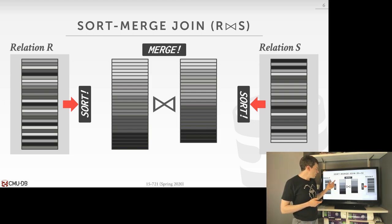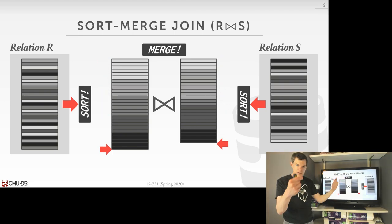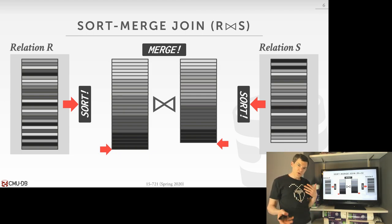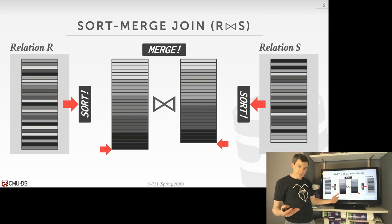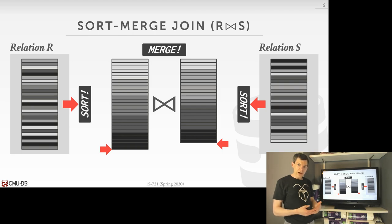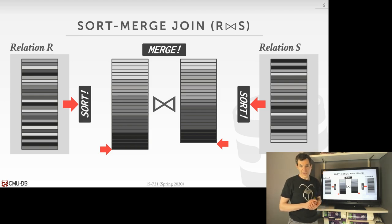At a high level, in phase one we sort tables R and S by the join key. Then in the merge phase, two iterators scan through the sorted tables. If we have matching tuples on the inner and outer table, we combine their attributes and write them into the output buffer. One thing to note: we'll be doing a sort-merge join where the sort itself is a merge sort, so I'll be careful to distinguish between the merge phase of the merge sort and the merge phase of the sort-merge join.